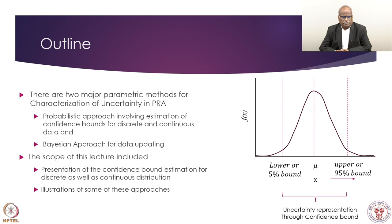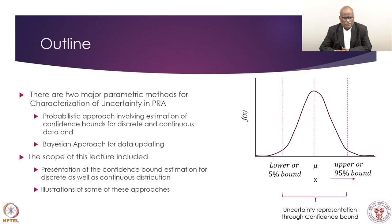In probabilistic risk assessment, this carries special significance because we talk about component failure probability. For most components, when we have access to a database, we find that they have a log-normal distribution. When log-normal distribution is defined, the uncertainty is typically characterized by the 95% bounds. These bounds can be one-sided or both-sided, depending on our interest in estimation of uncertainty for arriving at failure estimates.